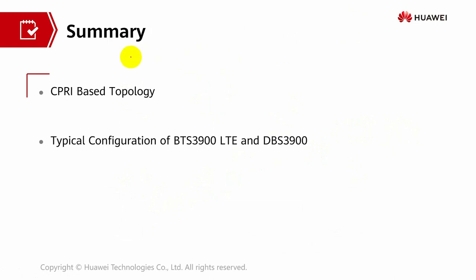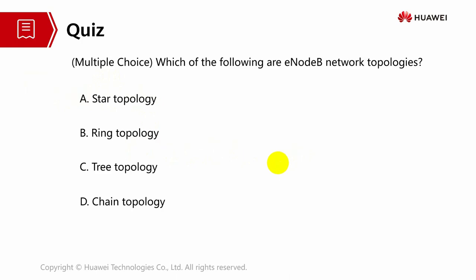That's all for this part. We discussed CPRI-based topology, typical configurations of BTS 3900 series LTE, and DBS 3900 series LTE. Quiz question: Which of the following are E-NodeB network topologies? The answer is A, C, and D — star, tree, and chain. Thank you, have a nice day.